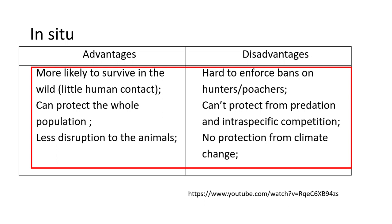For in-situ conservation, the advantages are: animals are more likely to survive in the wild due to little human contact, and you can protect the whole population — for example, the whole population of rhinos or elephants — whereas a zoo can only protect perhaps 10 elephants. Disadvantages include: it can be difficult to enforce bans on hunters and poachers, you can't protect animals from predation, and there's no protection from climate change.